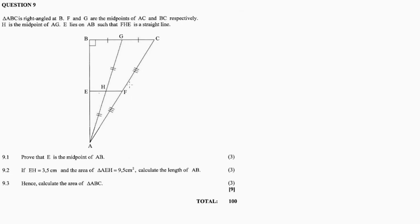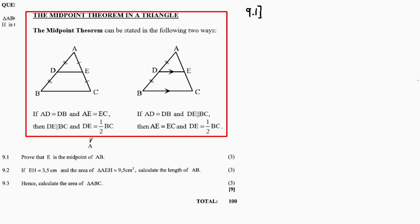So we need to show that H is the midpoint, meaning FH and HG imply H is the midpoint. Before we go on to the proof, let's do a recap on the midpoint theorem in a triangle.